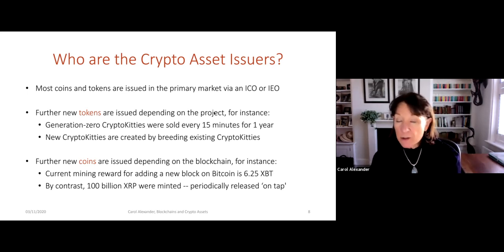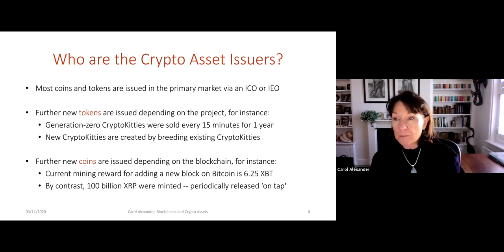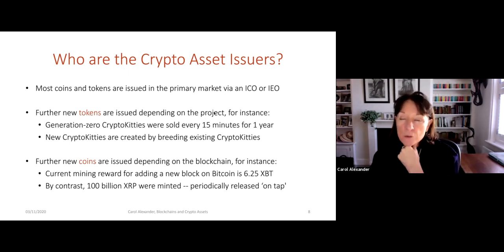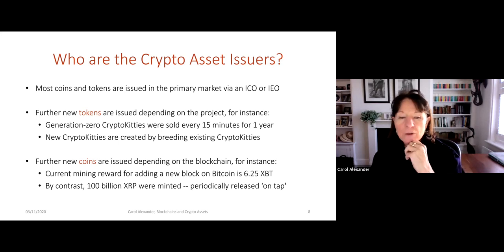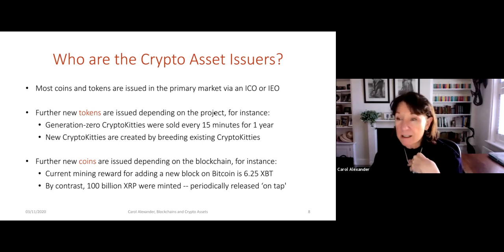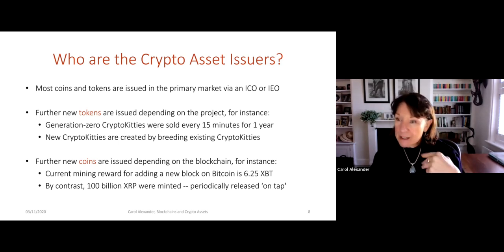With coins, it depends on the blockchain. For example, the current mining reward for adding a new block on the Bitcoin blockchain is 6.25 Bitcoin. Bitcoin is being minted all the time, but eventually the reward will go down to more or less zero — that's why Bitcoin is not a fiat currency; you can't print as much as you like. Ripple: originally a hundred billion Ripple were minted — it's not mined, and that's what makes it so fast. These coins are periodically released on tap.